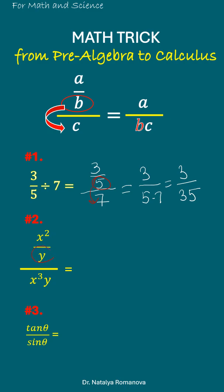Now the y goes to the denominator. We have x² divided by y times x³y. We can cancel out x², leaving us with 1 over y²x.